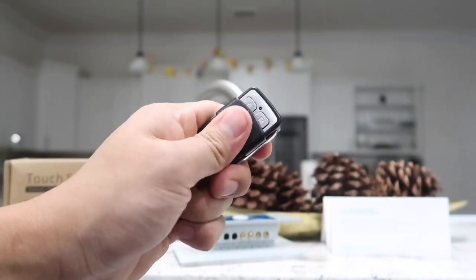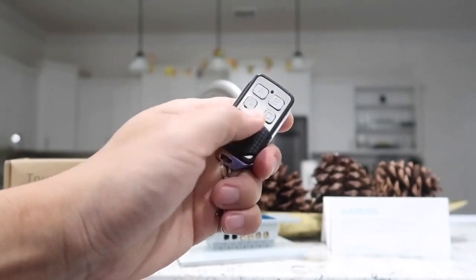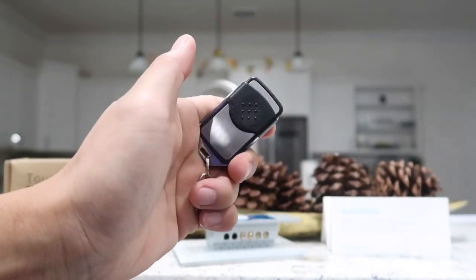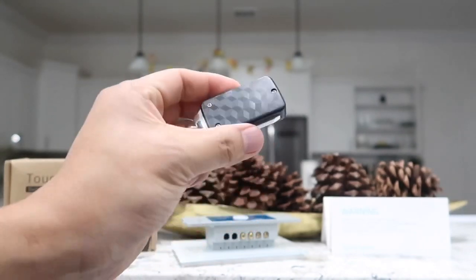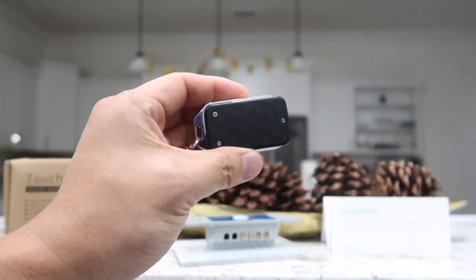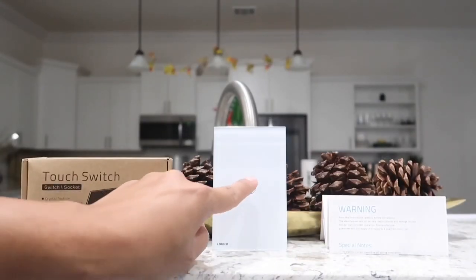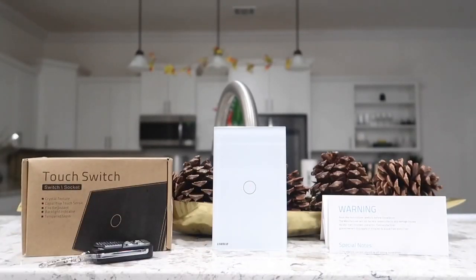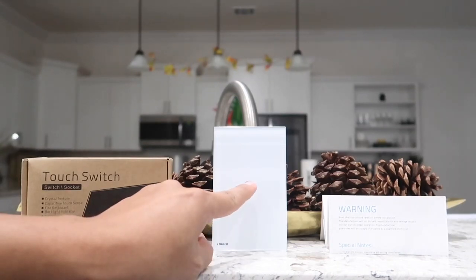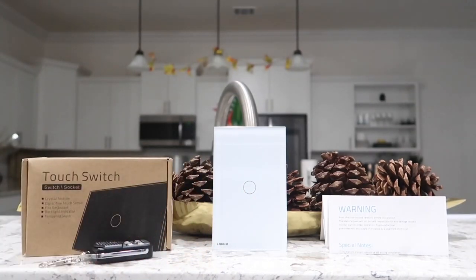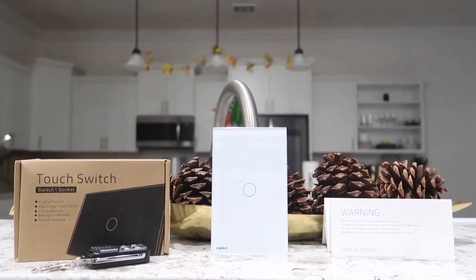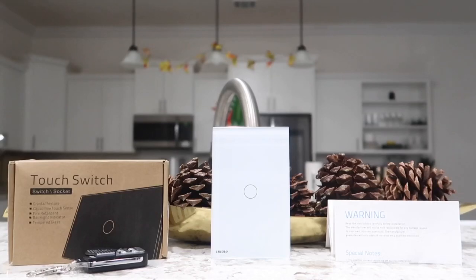The remote does require one battery. After everything is installed, we can either use this remote to turn our lights on and off from anywhere inside our home as long as we are within a 100 foot radius. We can also continue to use the light switch just like normally by simply touching the glass panel to turn the lights on and off. The touch sensor is very sensitive and will respond instantly to our touch which is very cool.